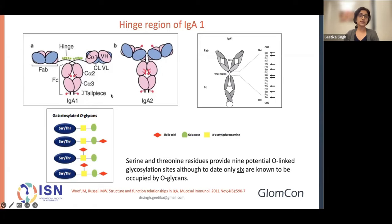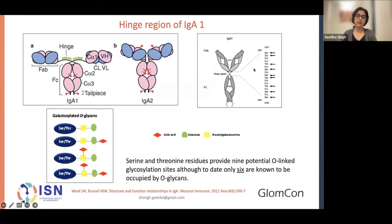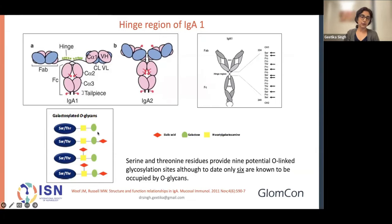IgA1 is special because it has a hinge region located between the heavy chain constant domains CH1 and CH2, composed of an 18 amino acid sequence. This is important because it can undergo O-linked glycosylation at serine and threonine residues, which serve as points at which glycation occurs. The glycation starts with a core of N-acetylgalactosamine, followed by variable sialylation or galactosylation — either in series or both attached to the N-acetylgalactosamine.